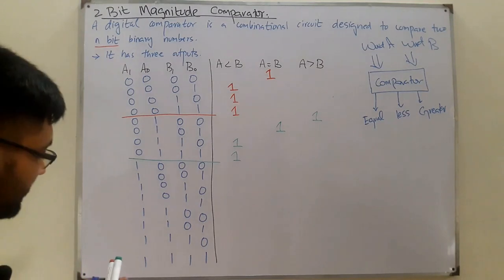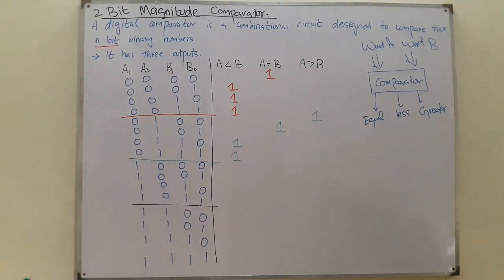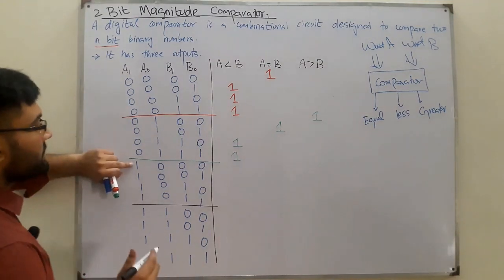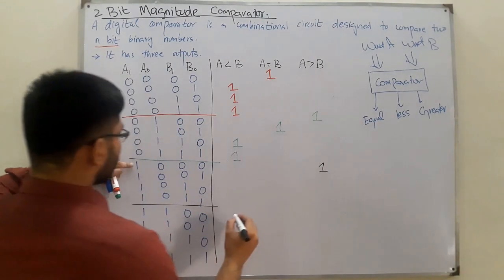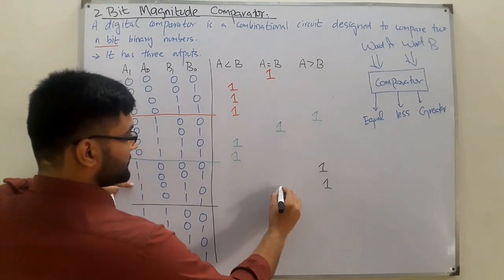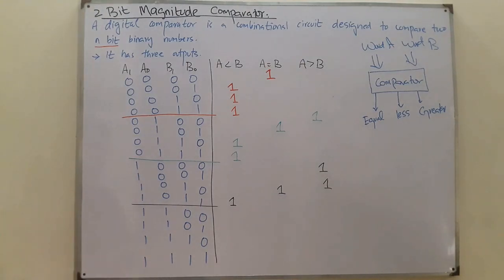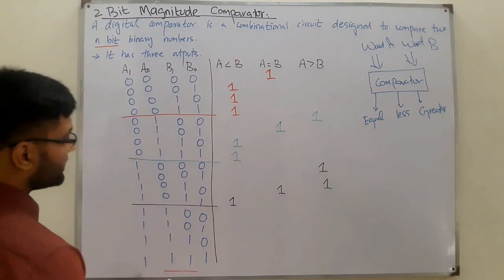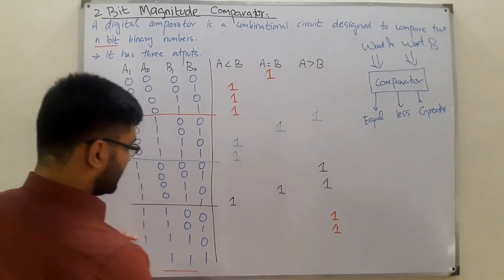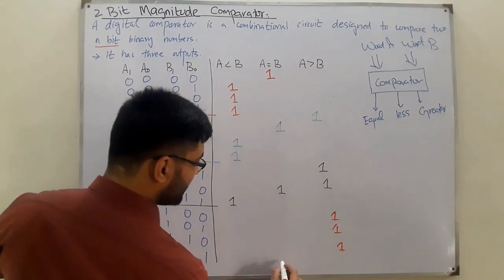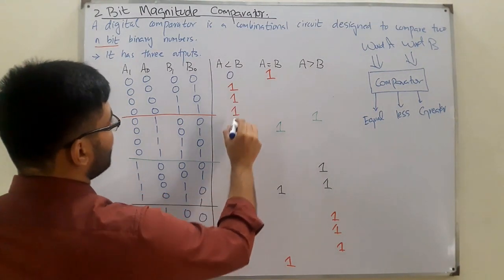For the cases where A is two: two is greater than zero, so A-greater-than-B; two is greater than one, so A-greater-than-B; two equals two, so A-equal-to-B; and two is less than three, so A-less-than-B. Finally, when A is three: three is greater than zero, greater than one, greater than two, and equal to three for the final case. The remaining outputs are filled as zeros.